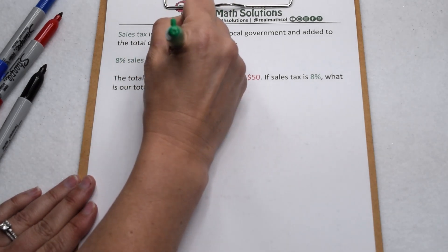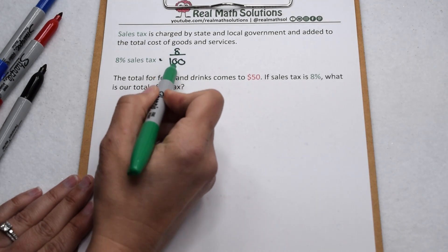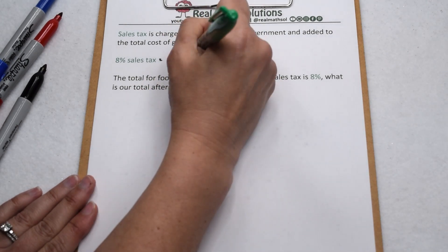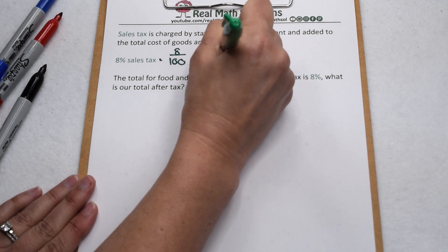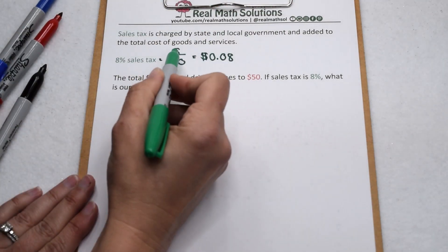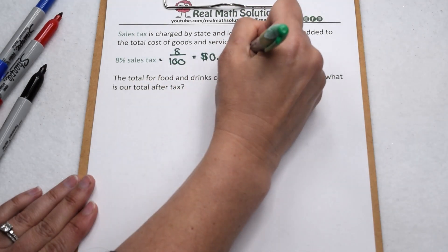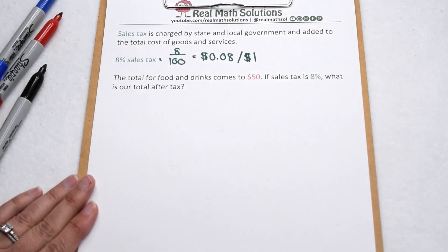If we want to think about this in terms of money, let's change 8% to a fraction. Percents represent fractions out of 100, so that would be 8 out of 100. In terms of money, we have to think about decimals. 8 hundredths would be 8 cents. So we would pay an additional 8 cents for every 100 cents that we spend or an additional 8 cents for every $1 that we spend.